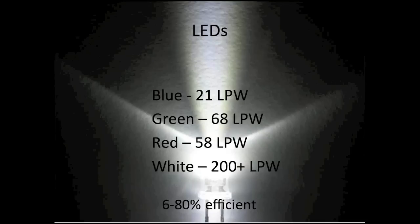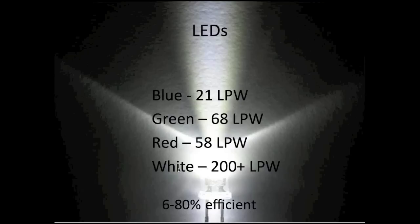Now let's talk about LEDs. Depending on the color: with the blue LED we get about 21 lumens per watt, green about 68, red about 58, and white over 200 lumens per watt. The first time I did this presentation, about two years earlier, I had to double those numbers — my little confirmation of Haitz's Law. So we're looking at a range of 6 to 80 percent efficiency. White light is way more efficient because that's where all the R&D has been, and we're seeing big improvement with over 200 lumens per watt under perfect laboratory conditions.